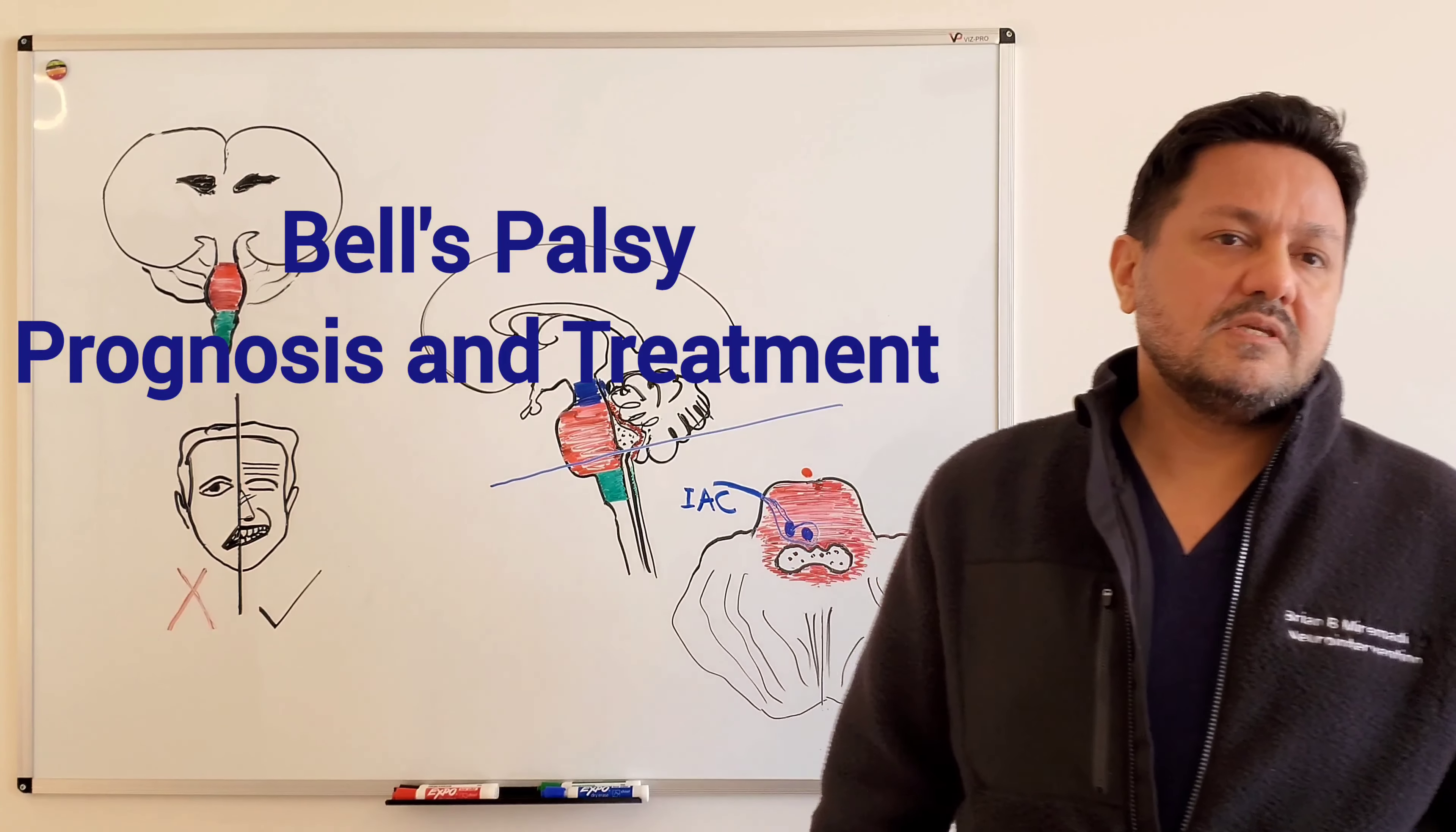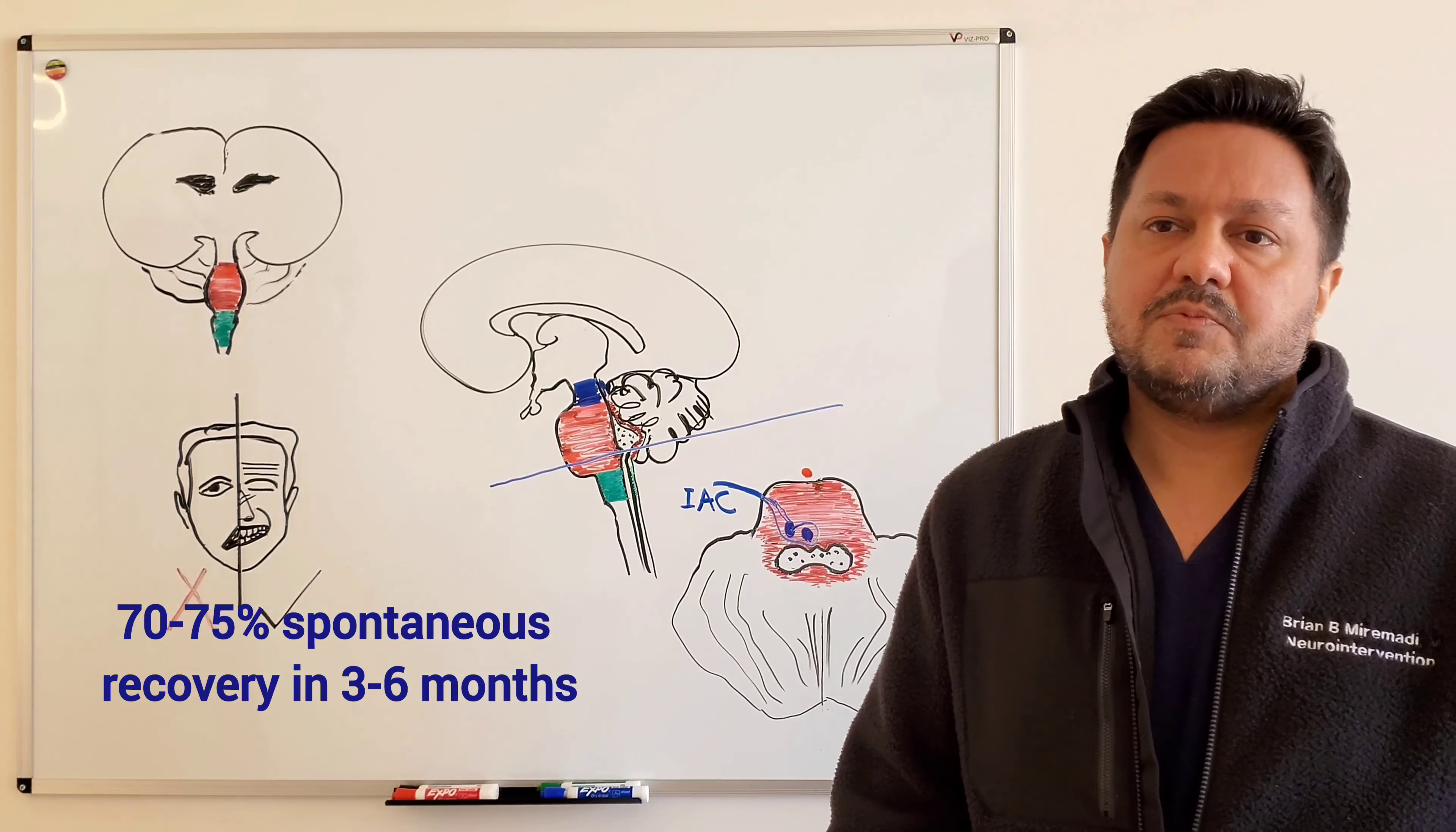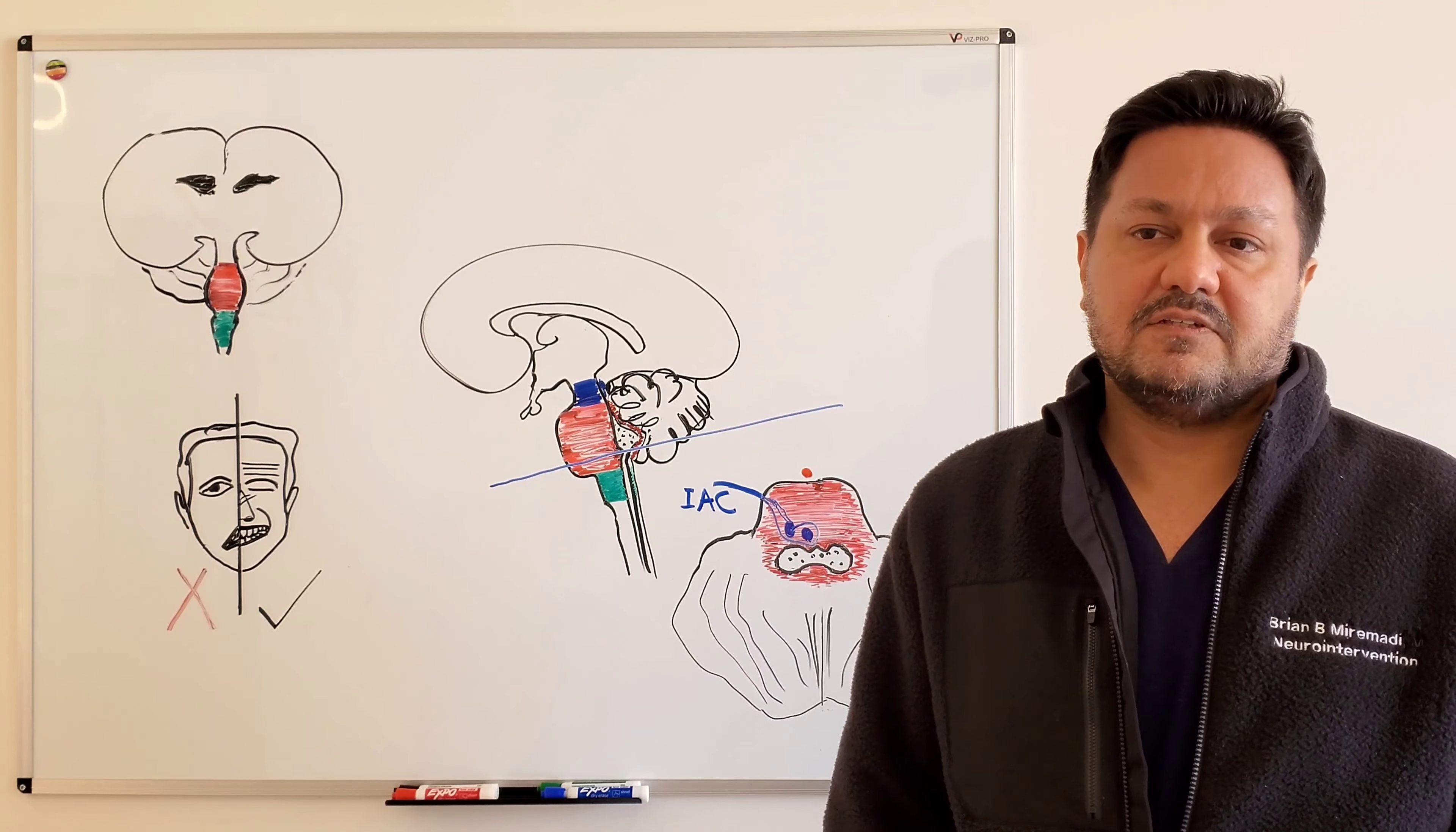Prognosis of Bell's palsy is usually good. 70 to 75 percent of patients will become asymptomatic within three to six months after presentation.